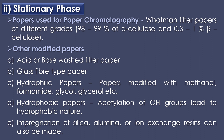Other modified papers used in paper chromatography include acid or base washed filter paper, glass fiber type paper, hydrophilic papers like papers modified with methanol, formamide, glycol, glycerol, etc., and hydrophobic papers in which acetylation of OH groups leads to hydrophobic nature. Impregnation of silica, alumina, or ion exchange resins can also be made.